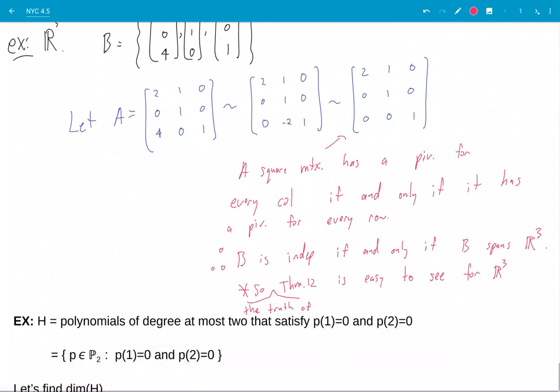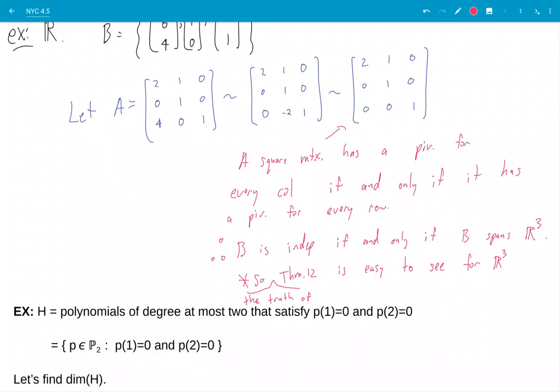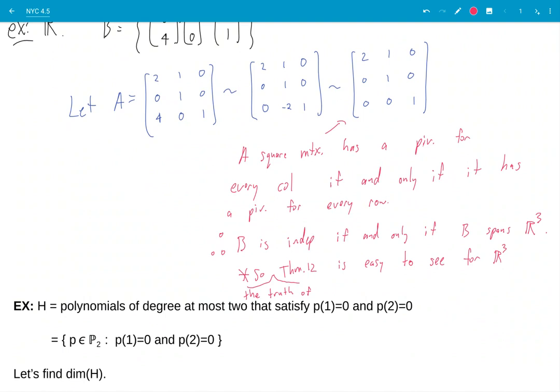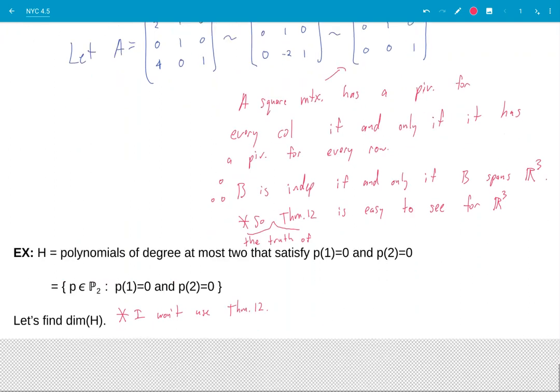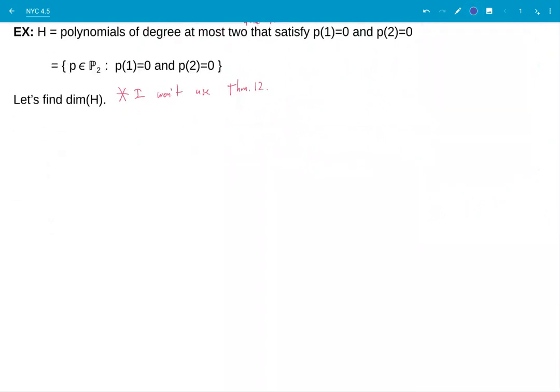Okay, next example, pause and copy. This example is, I'm not going to be able to use theorem 12. So this is a separate example. I just want to go through to give you a bit more experience with polynomials. I won't use theorem 12. I suppose you could use theorem 12, but it wouldn't be efficient, I don't think.